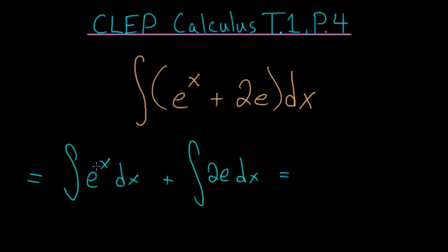e to the x is the special function where its derivative is equal to the function itself. So if we take its integral, it would just be e to the x plus a constant term, which I'll put at the end.